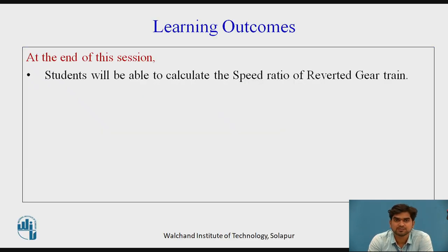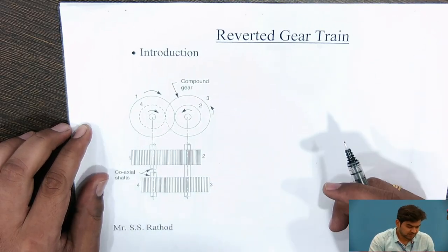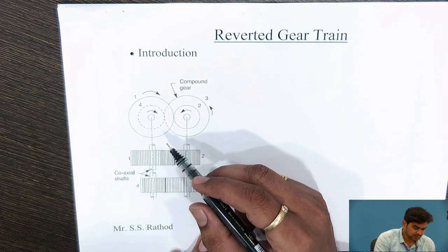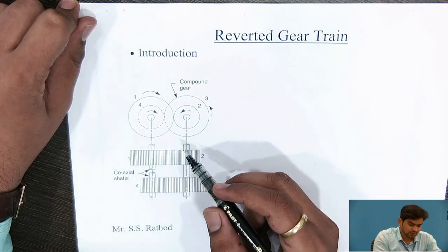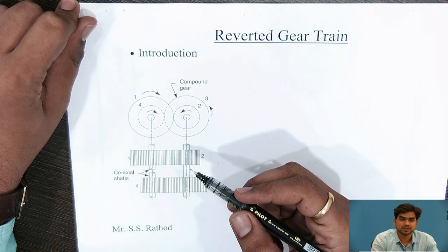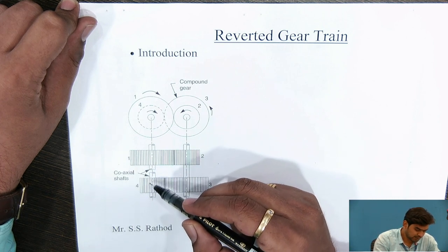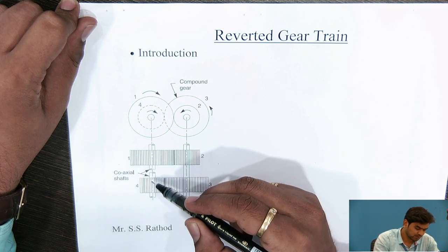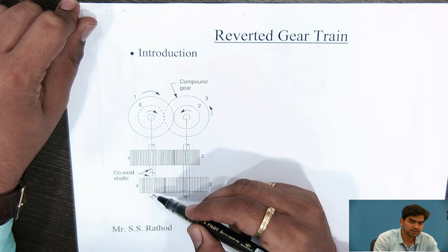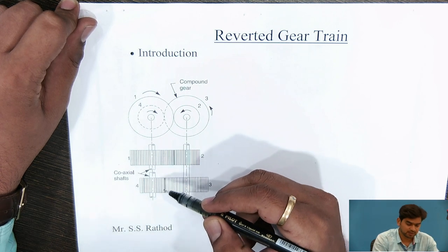In this session, the learning outcome is: at the end of this session, the student will be able to calculate the speed ratio. A reverted gear train is one where the input axis and the output axis of the shaft on which the gears are mounted are coaxial. Then it is called a reverted gear train.